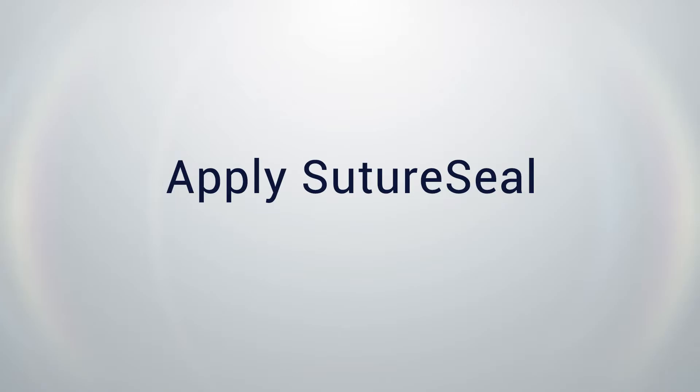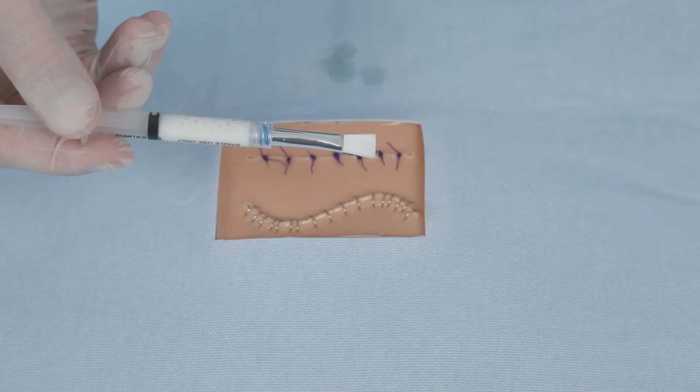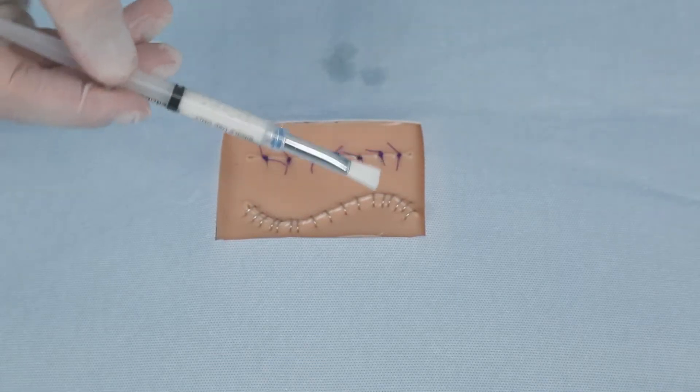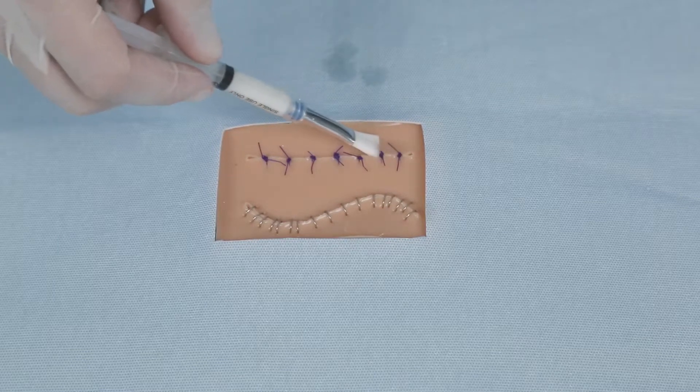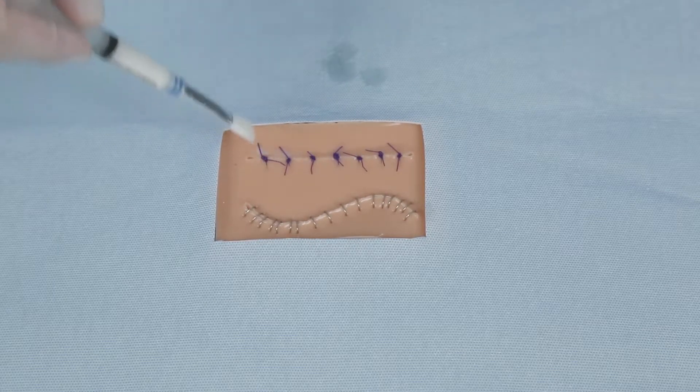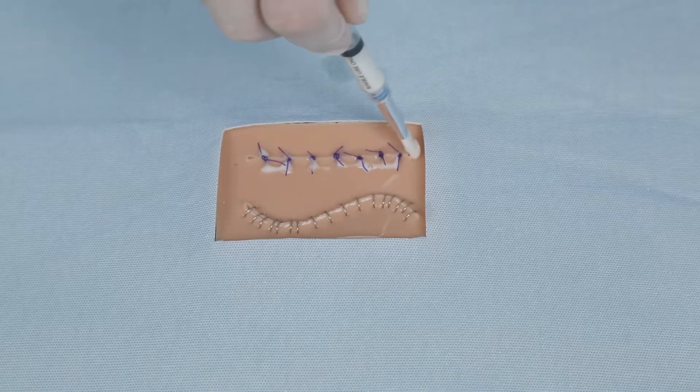The last step is to apply Suture Seal to the affected area. Suture Seal can be applied to incisions with sutures or staples and many types of open wounds. It is important to note that after the products are mixed, you have approximately 80 to 120 seconds to apply Suture Seal to the incision or wound before it gels into a clear flexible sealant.